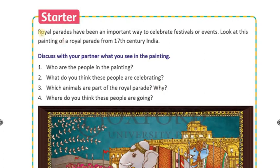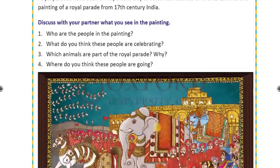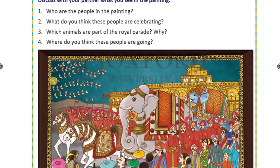Starter. Royal Parades have been an important way to celebrate festivals or events. Look at this painting of a Royal Parade from 17th century India. This picture is related to the 17th century.